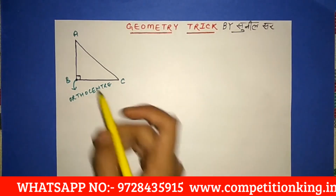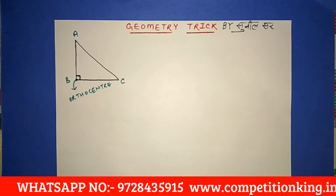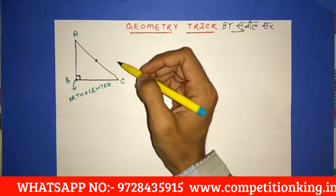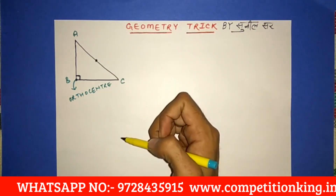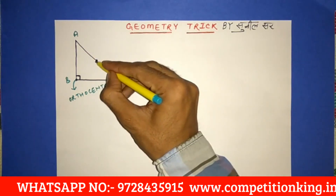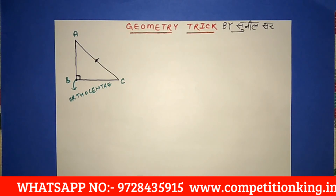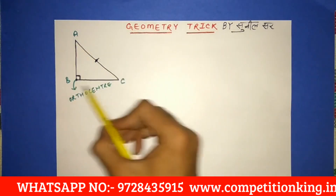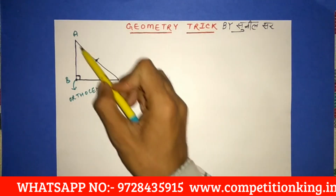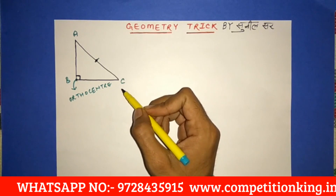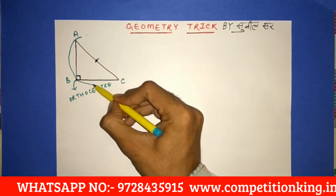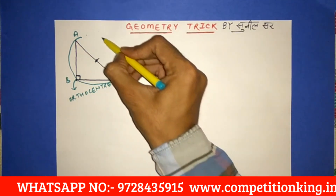The circumcenter of a right angle triangle lies at the midpoint of the hypotenuse. This is a very important result — the circumcenter is the point where all vertices are equidistant, and it sits at the midpoint of the hypotenuse.